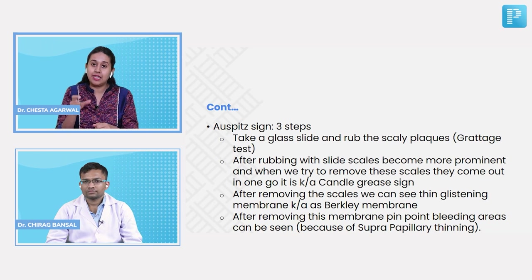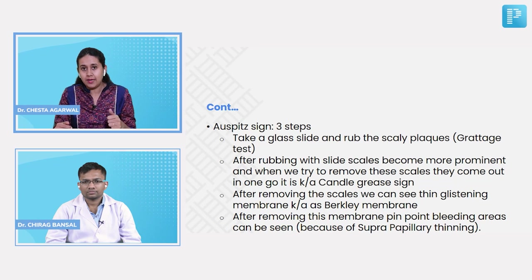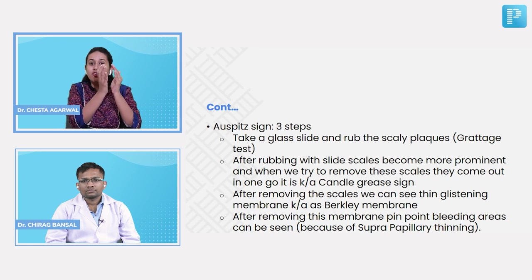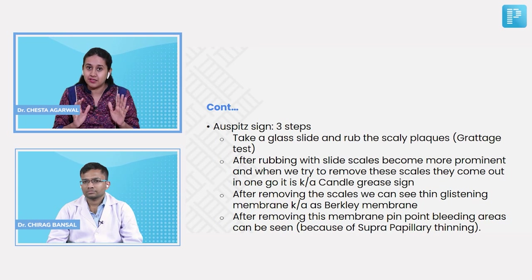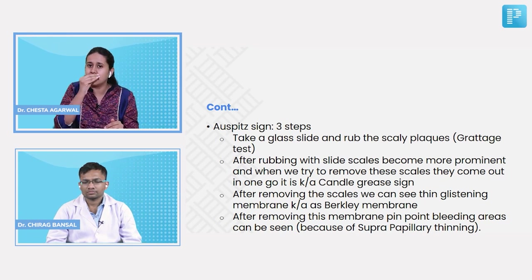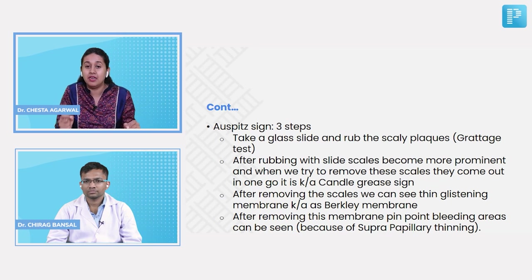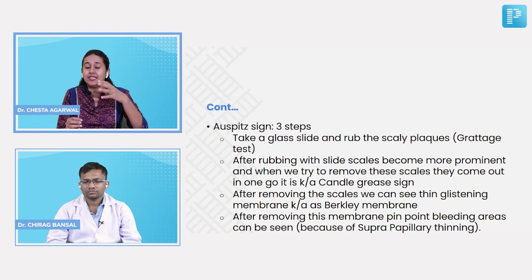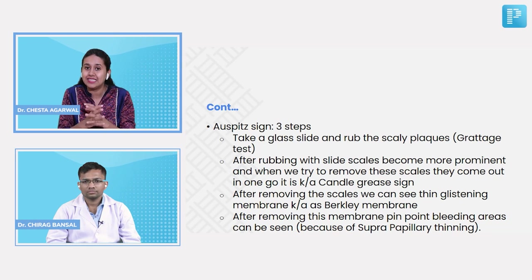In the Auspitz sign three-step procedure: Step 1 — take a glass slide and rub the scaly plaque (grattage); scales become prominent and are removed in one go, known as the candle grease or candle wax sign. Step 2 — remove the scale to see a thin glistening membrane, Brocq's membrane. Step 3 — remove Brocq's membrane to reveal pinpoint bleeding areas. These occur because of suprapapillary thinning, very frequently seen in psoriasis.